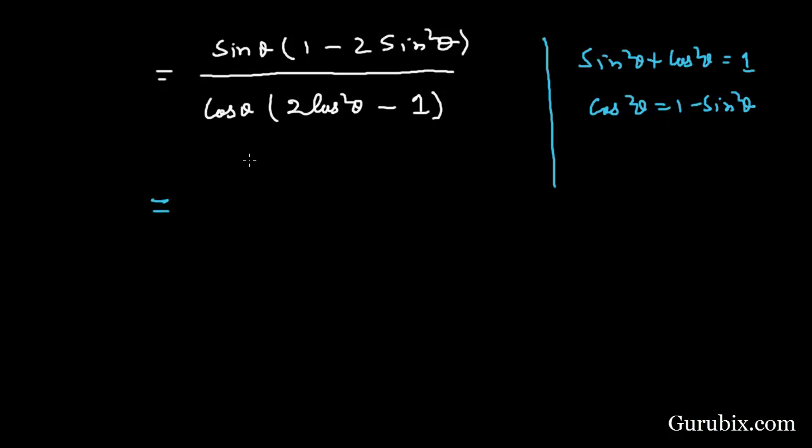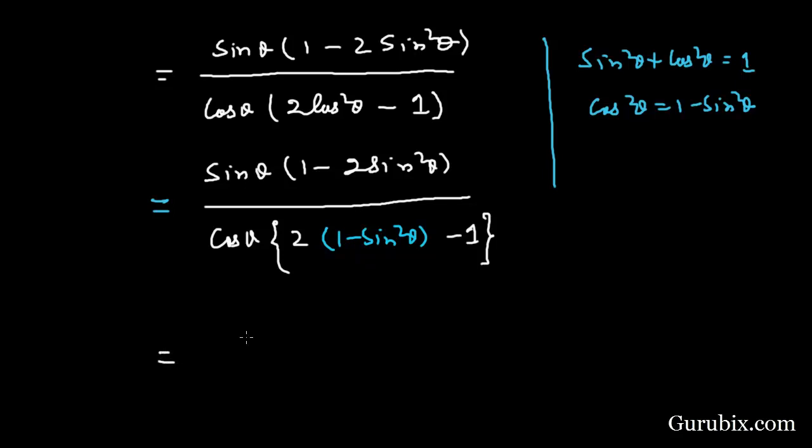So we have sin θ times (1 - 2sin²θ) in the numerator and cos θ in the denominator. In the bracket, we have 2cos²θ - 1, where we can write (1 - sin²θ) in place of cos²θ, giving us (1 - 2sin²θ).